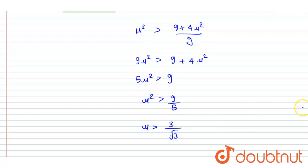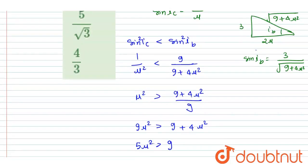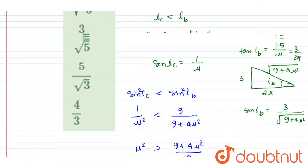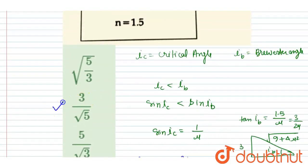Now we want minimum value, right? And you can see here mu should be greater than 3 by under root 5, right? So you can see already the minimum value of mu is 3 by root 5, and that is option B.